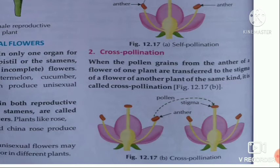When pollen grains are transferred from the anther of a flower of one plant to the stigma of a flower of another plant of the same kind, it is called cross pollination. This means the flowers are placed on different plants and the male and female plants are separated. Pollen grains have a tough protective coat.